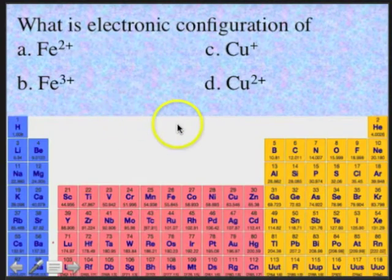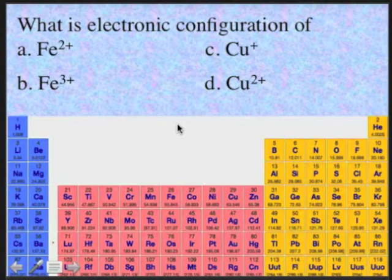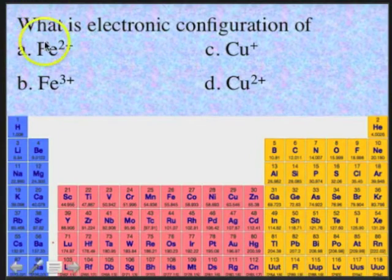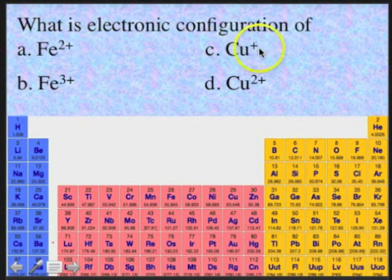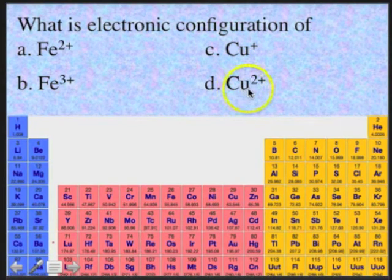With that in mind, let's do the electron configurations of ferrous (Fe2+), ferric (Fe3+), cuprous (Cu+), and cupric (Cu2+).